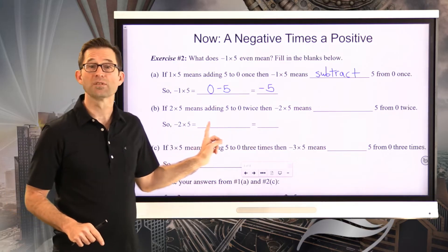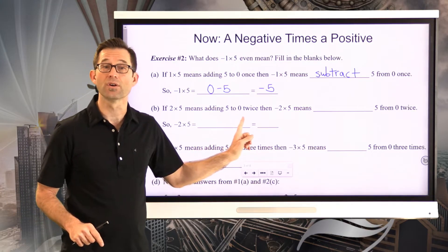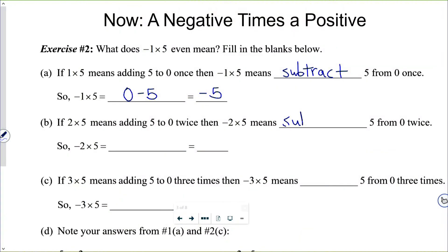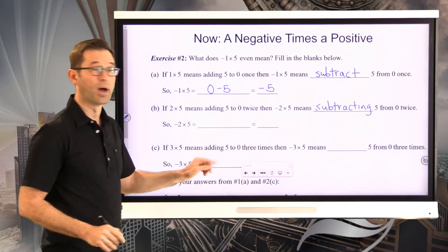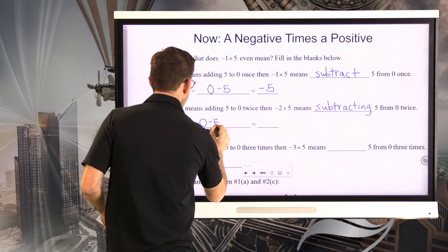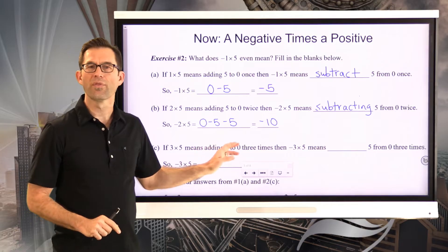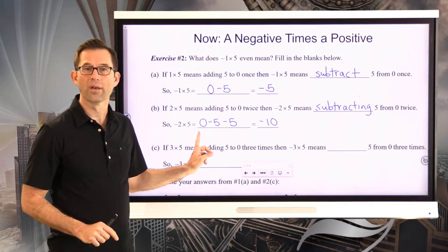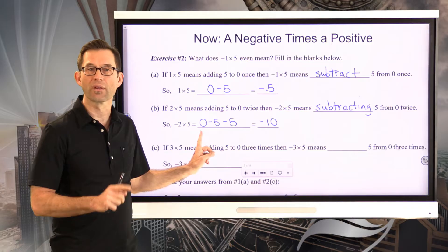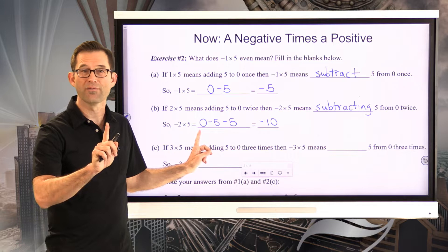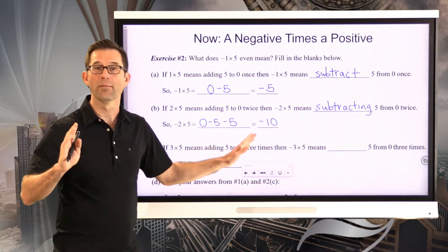We can extend this: 2 times 5 means adding 5 to 0 twice, so negative 2 times 5 means subtracting 5 from 0 twice. That gives 0 minus 5 minus 5, which is negative 10. Think about sitting at 0 on the number line — if you subtracted 5 you'd be at negative 5, then subtract 5 again and you're at negative 10.